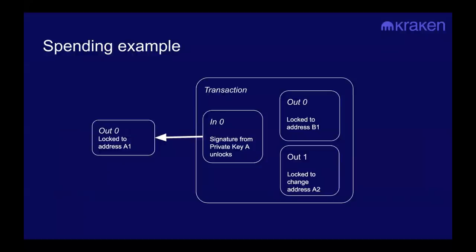Here's an example of spending an output. There's an existing output locked to address A1, associated with a private key. Using private key A, the sender provides a signature that unlocks that output and locks up the Bitcoin in two new outputs: one to the recipient's address B1, and the other to a change address A2. In Bitcoin, when you unlock an output you have to spend it all — if you don't spend it all, what you don't spend will go to the miner. So make sure you're either sending all the Bitcoin to the intended recipient or getting change back.